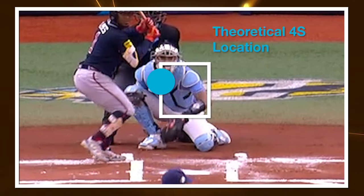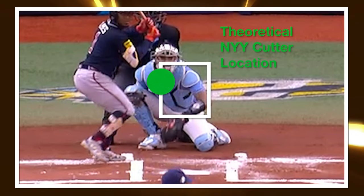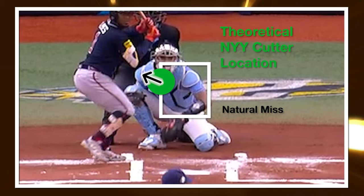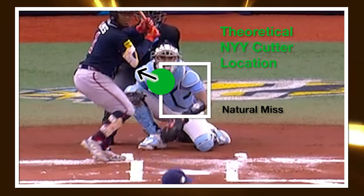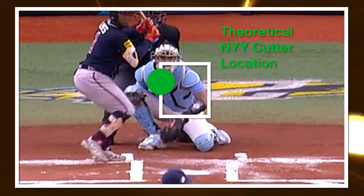Although this is anecdotal, I do think it's inherently easier for pitchers to locate pitches up that have more backspin or more induced vertical break. And then the added glove side movement of the Yankee cutter moves that natural miss away from the pitcher's arm side to be more neutral or glove side. So the misses are now off the plate inside to a lefty — it's just generally a safer pitch.